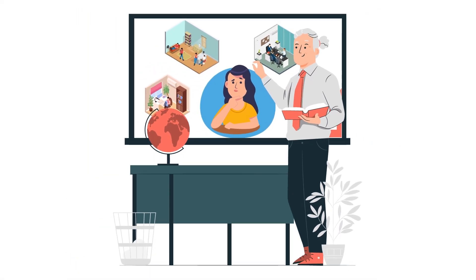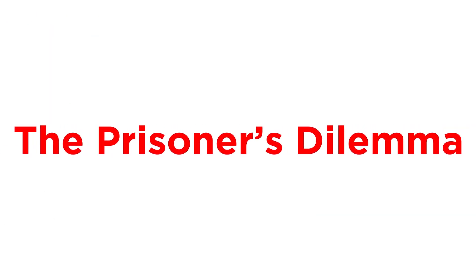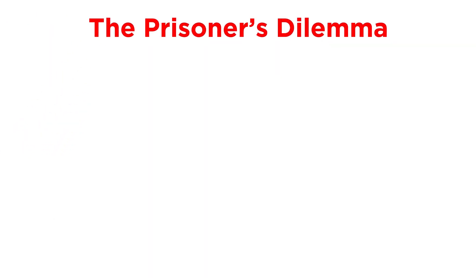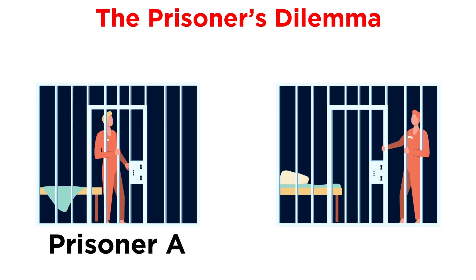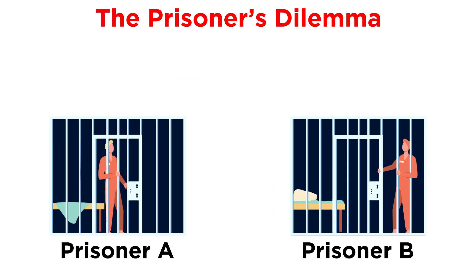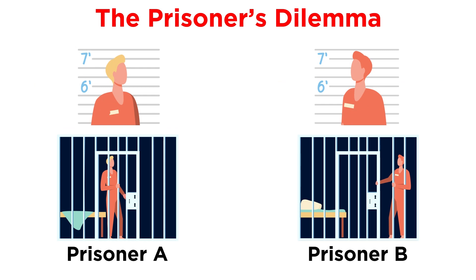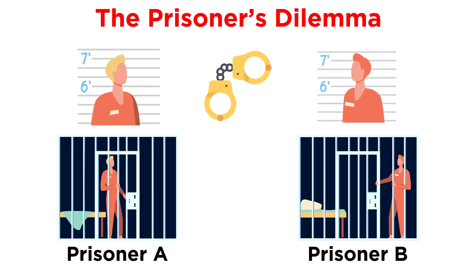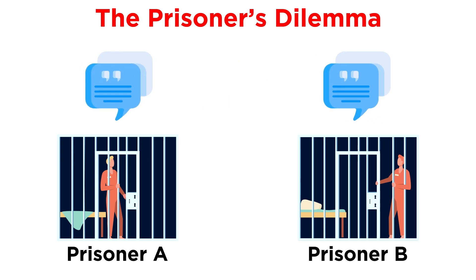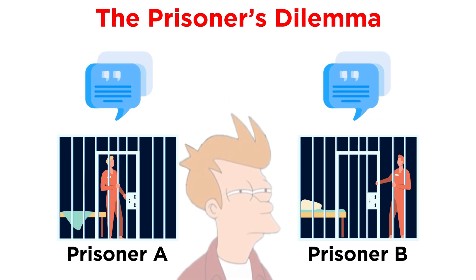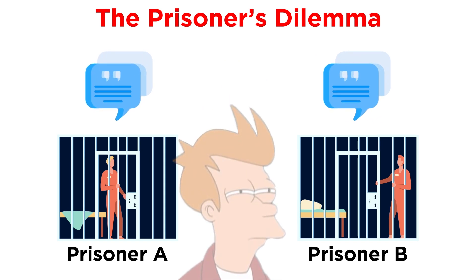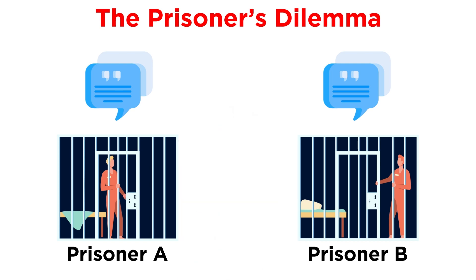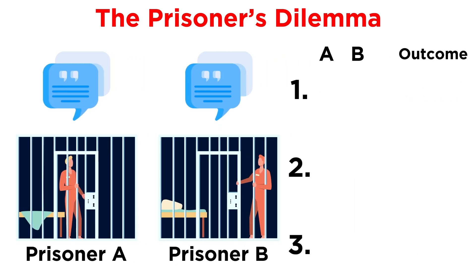Psychologists can study which factors impact cooperation through a scenario called the prisoner's dilemma. Here's how it works. Imagine there are two prisoners, prisoner A and prisoner B. Each of them has been charged with a crime, and they are being detained separately. The police give each of them a chance to confess to the crime, but neither prisoner knows if the other prisoner will also confess. Depending on who confesses, there are several possible outcomes.